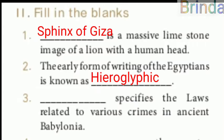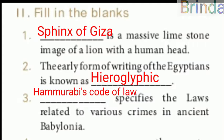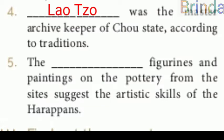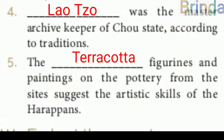Third: dash specifies the laws related to various crimes in ancient Babylonia — the answer is Hammurabi's code of law. Fourth: dash was the master archive keeper of Chau State according to tradition. Fifth: the dash figurines and the painting on the pottery from the sites suggest the artistic skill of the Harappans — the answer is terracotta figurines.